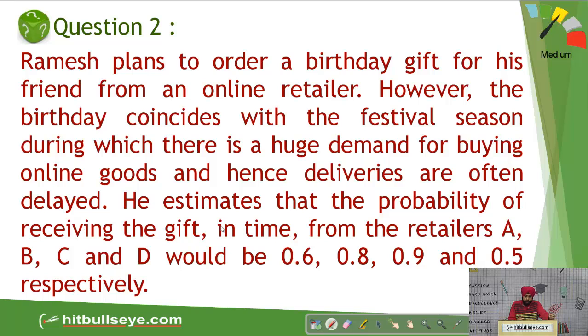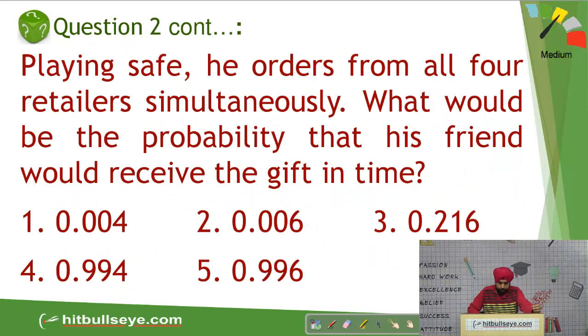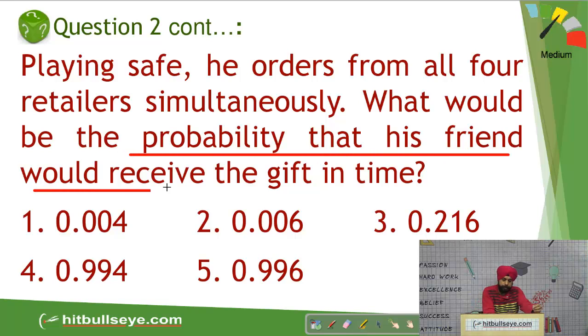Let's go to the next one. Ramesh plan to order a birthday gift. These are the probabilities that he receives the gift within the stipulated time. It says probability that his friend would receive the gift in time.